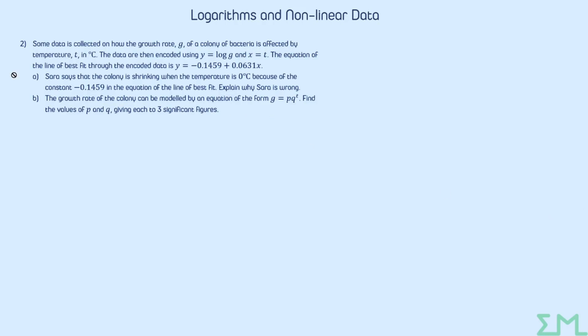Let's do another question so we can see the other type. Let's have a look at this one. No graph given to us this time. I can see an equation of a straight line in there though. We are looking at the growth rate of a colony of bacteria and how it's affected by the temperature T. Data is encoded using this transformation: Y equals log G and X equals T. Straight away we're noticing that it is only the dependent variable that has had log applied to it. The independent variable has been left alone. So this is a big clue to us that we're working with what was originally an exponential model and has been brought down to a straight line graph using logs.